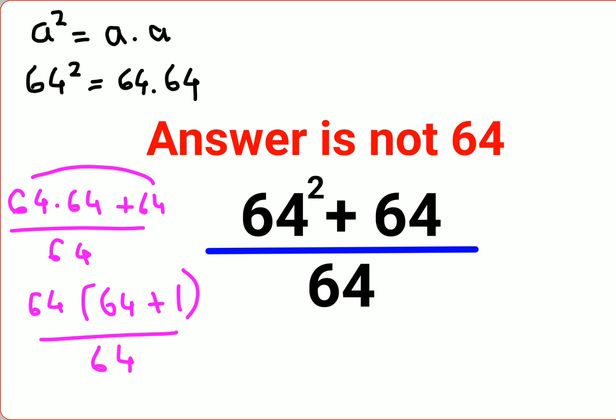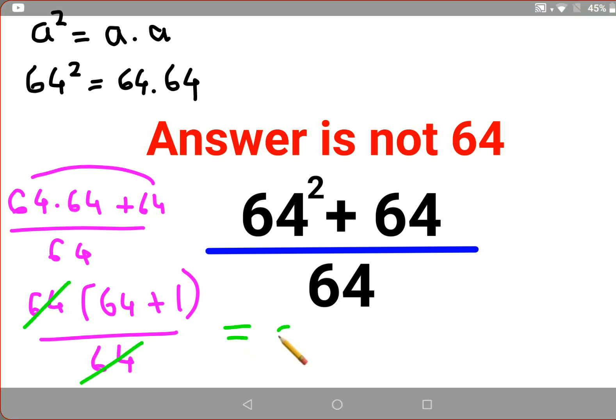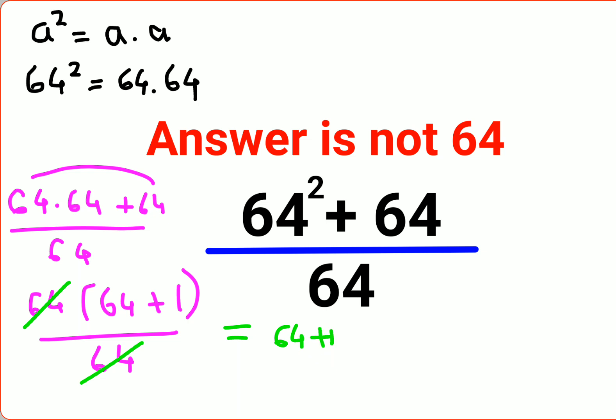So this is then divided by 64. Now what happens is this 64 and 64 gets cancelled. You are basically left with just 64 plus 1 whose value comes out to be 65.